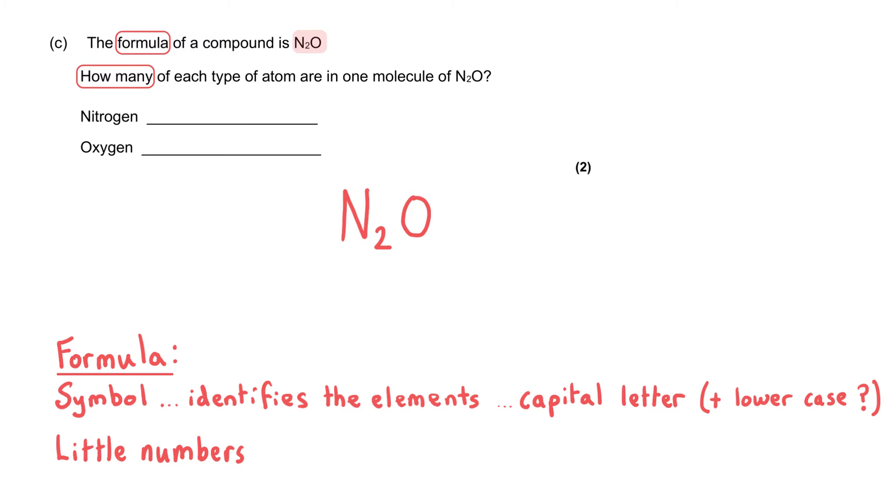And then we have numbers in a formula, and the numbers belong to the previous element in the formula, and they are referred to as multipliers. So they multiply that previous element by whatever number they are. So in the formula N2O, the little two comes after the nitrogen, so it belongs to the nitrogen.